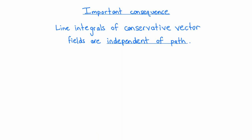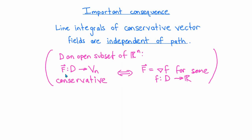One important consequence of the fundamental theorem of calculus for line integrals is that line integrals of conservative vector fields are always independent of path. Let me remind you of the definition: a vector field F on an open subset D of R^n is called conservative if and only if F is the gradient of a scalar field from D to R. This definition of conservativity was given in video 2.